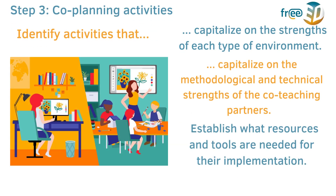The third step in this process is co-planning activities. It is very important to identify activities that capitalize on the strengths of each type of environment — online or face-to-face — and include those in your planning document. Also, capitalize on the methodological and technical strengths of the co-teaching partners. Experienced educators say that as you start thinking of a hybrid lesson as an online one with a certain number of face-to-face students present, you realize that planning is far simpler.